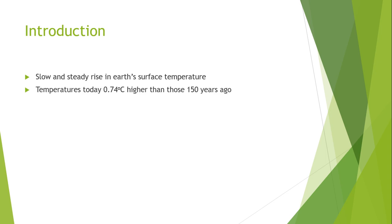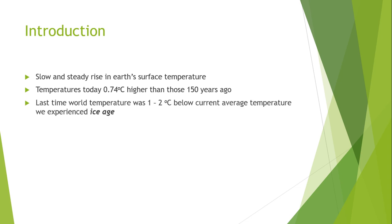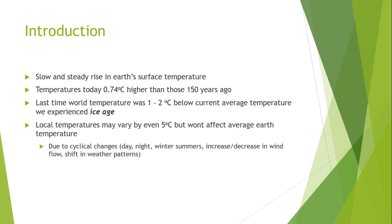Today's temperature is 0.74 degrees higher than it was 150 years ago. The last time world temperature was 1 to 2 degrees centigrade below the current average, we experienced an ice age. Local temperatures may vary by even 5 degrees but won't affect the average earth temperature due to cyclic changes like day and night, winter and summer, and shifts in wind flow and weather patterns.